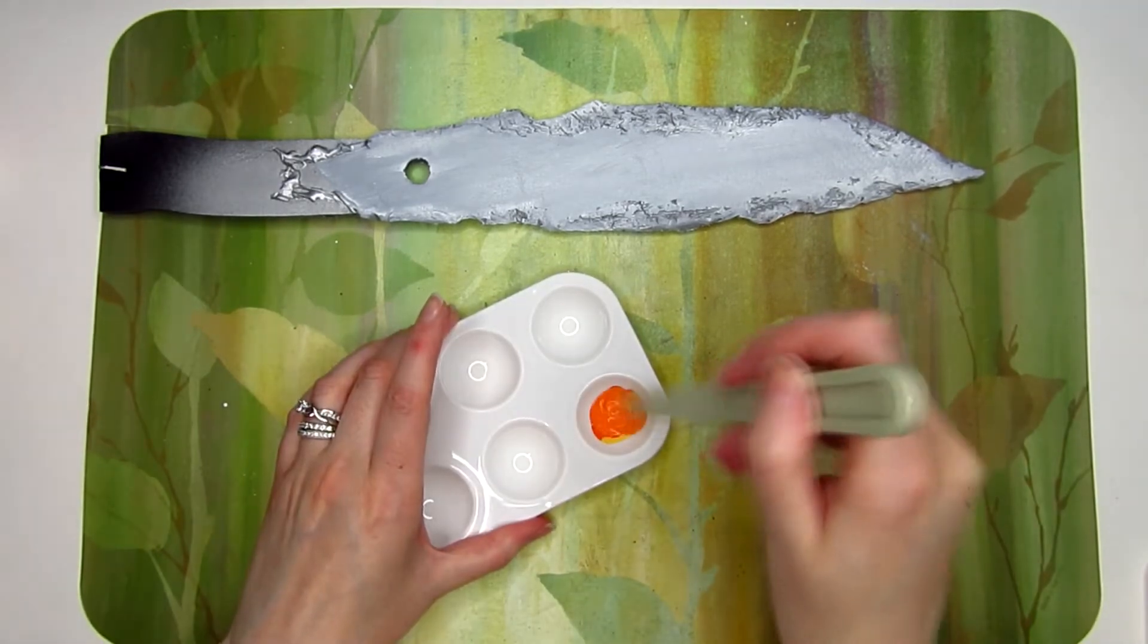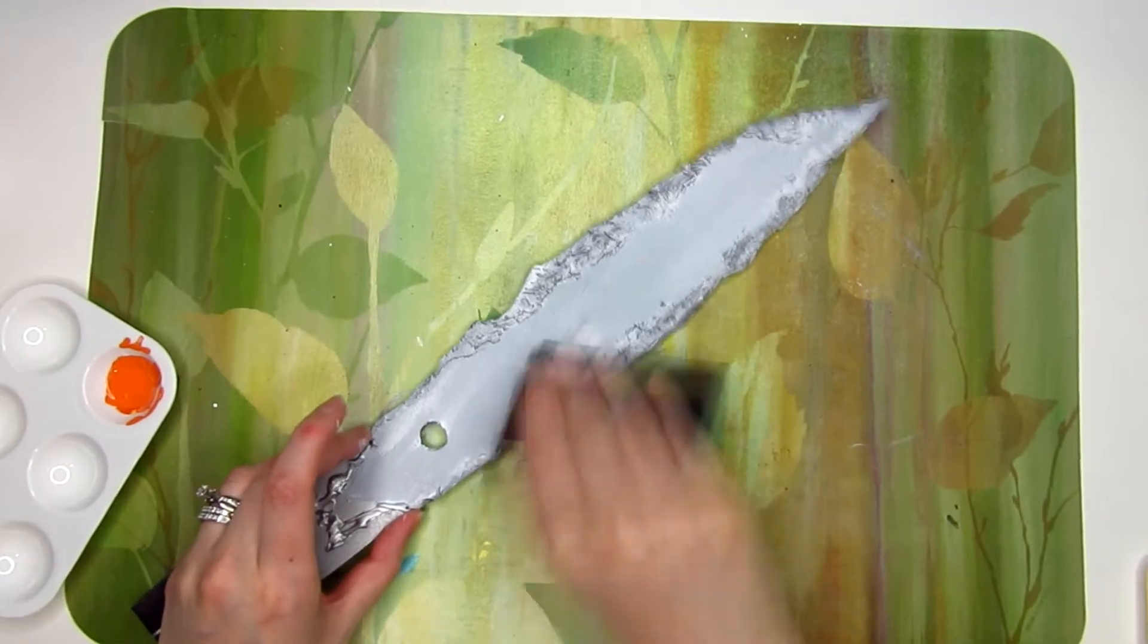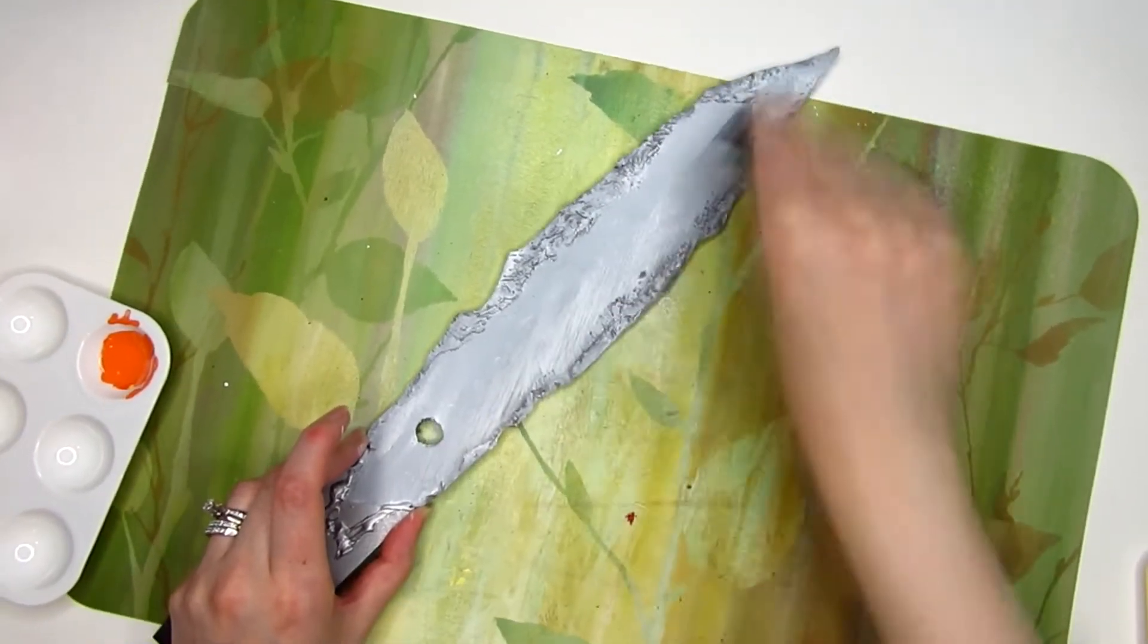With my sandpaper again, I scuffed it up a bit more before adding the bright orange paint. I continued to add some layers of paint and scuff it up until I got the desired look I was looking for.